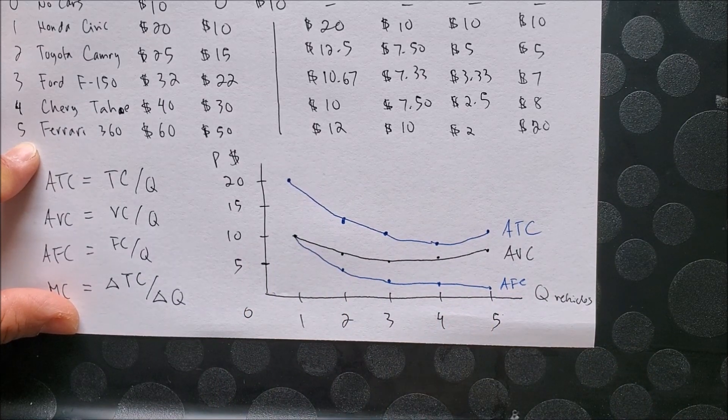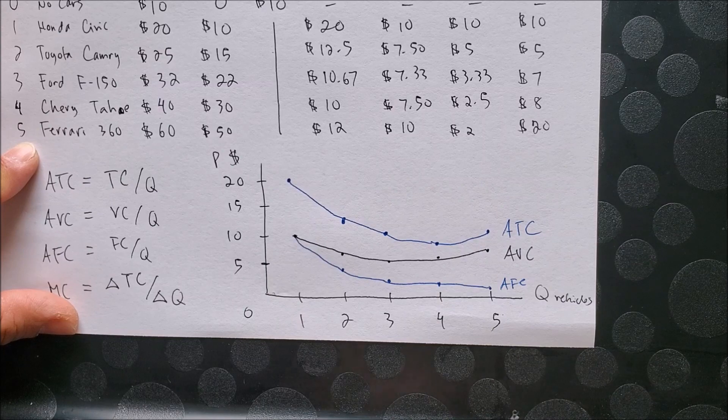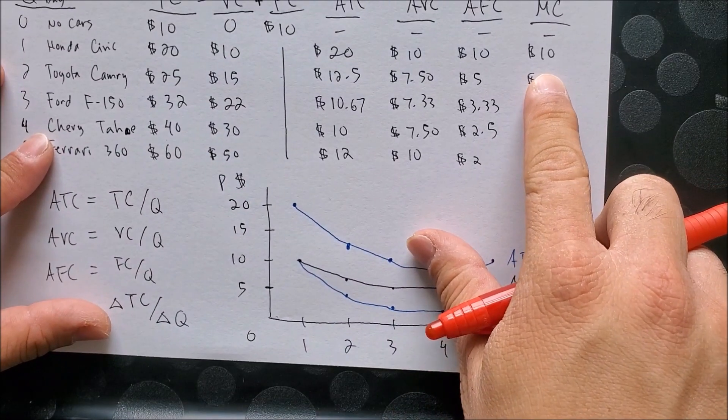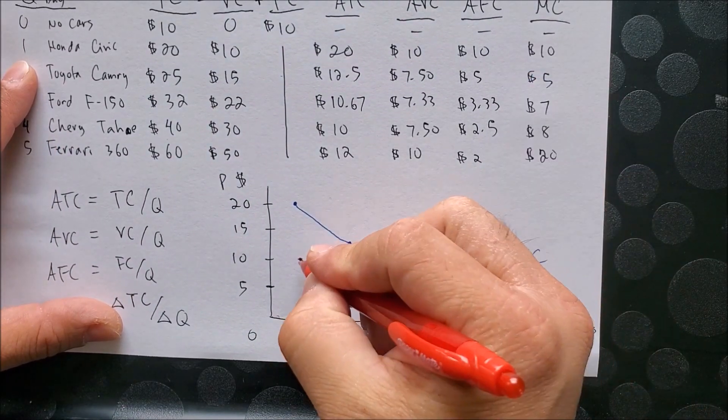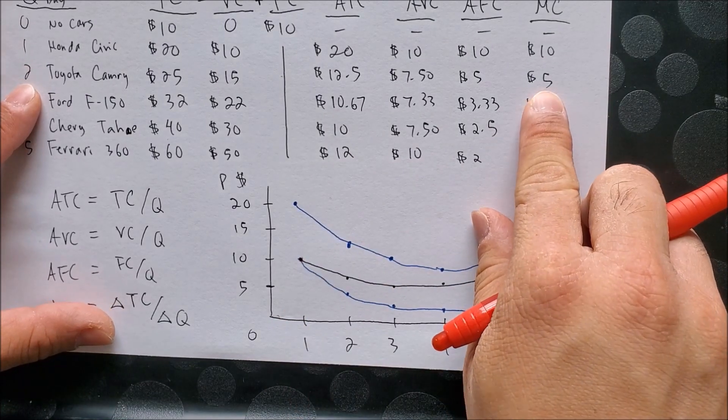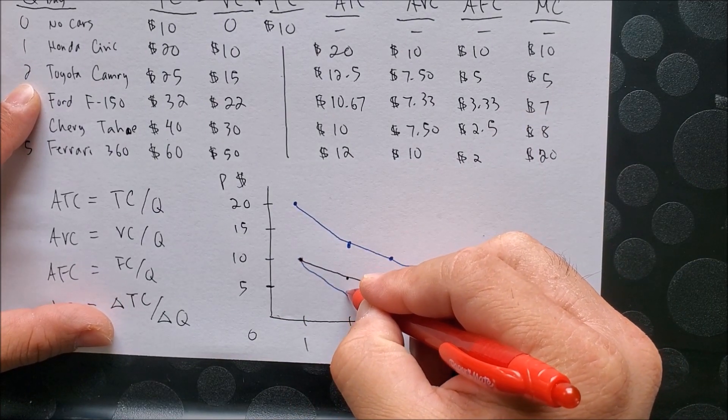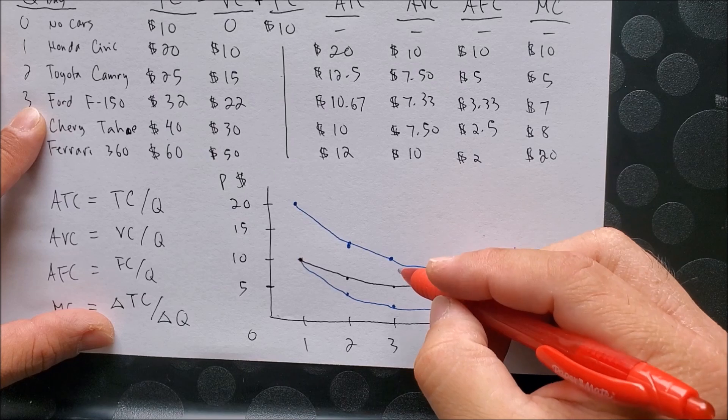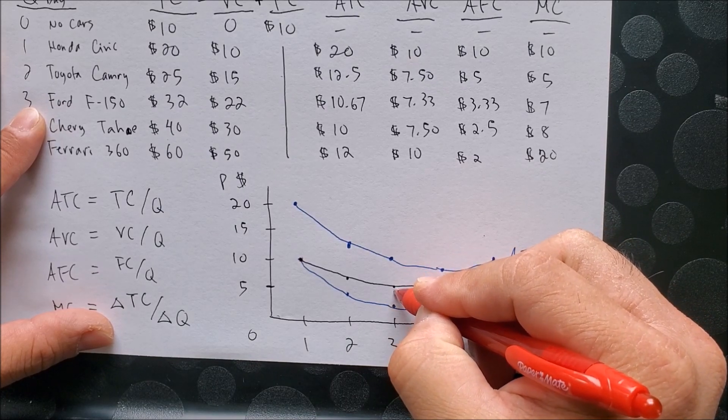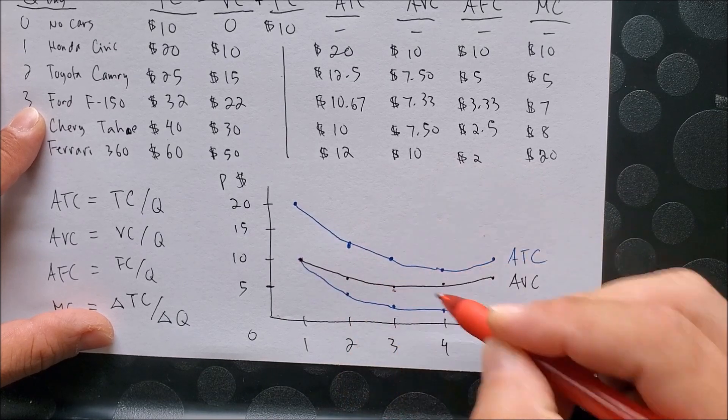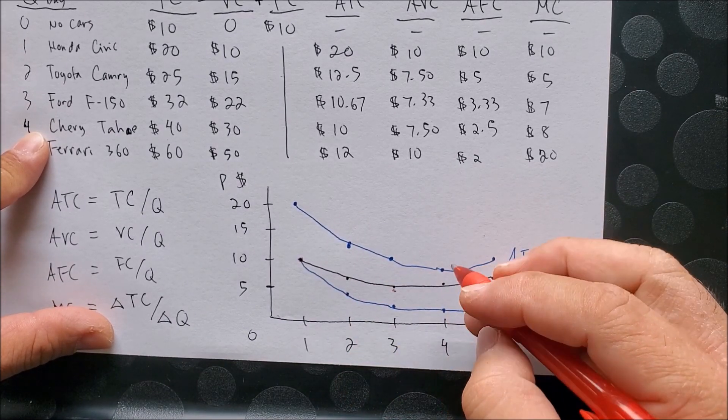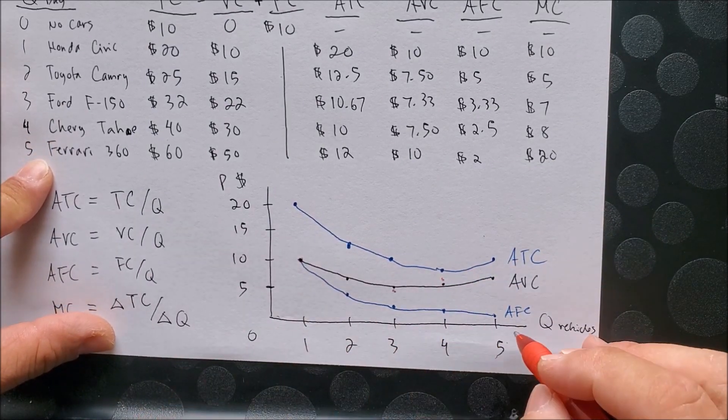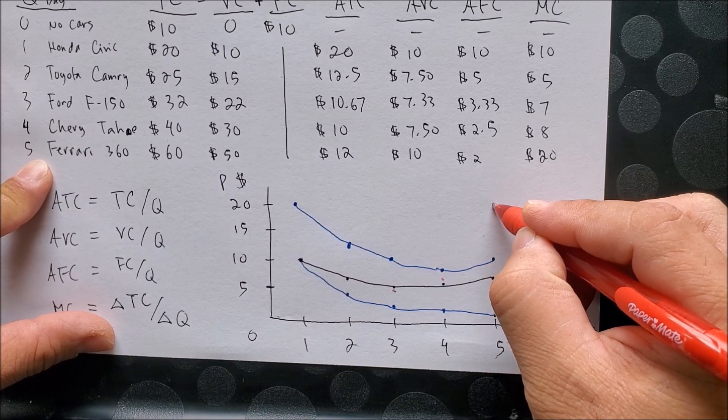So now that we have our ATC, AVC, and AFC, we can now draw our marginal cost curve. So here we have marginal cost. And here we have one vehicle, $10. Two vehicles, $5. Three vehicles, $7. Four vehicles, $8. And five vehicles, $20. Somewhere there.